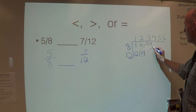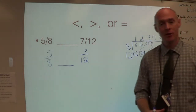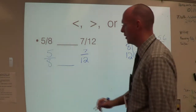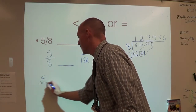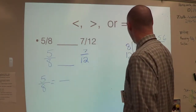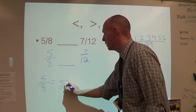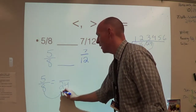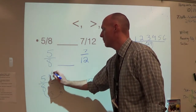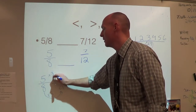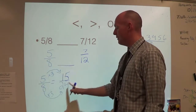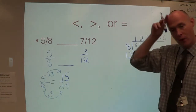Twenty-four is my least common multiple, or it's my least common denominator. We have five-eighths — that equals something over twenty-four. Eight times what is twenty-four? Eight times three. So we have to multiply the numerator by three. Five times three is fifteen, so five-eighths is going to equal fifteen twenty-fourths.